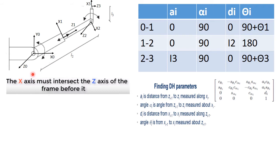For this technique, we have to remember that any X axis must intersect the Z axis of the frame before it. For X zero, we don't need to check since there is no frame before it. For X one, we check whether it is intersecting Z zero. Z zero is coming out of the screen and X one is on the screen, so there is no chance that X one will intersect Z zero.